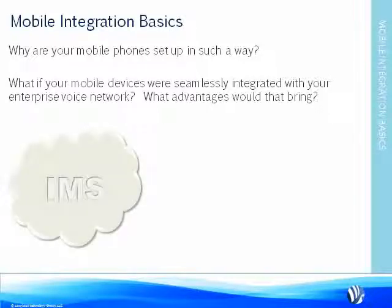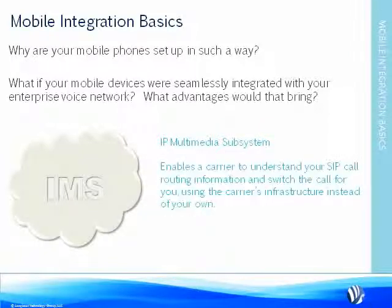The secret to effectively integrating mobile phones into your enterprise voice architecture is IMS, or IP Multimedia Subsystem. IMS enables a carrier to understand your SIP call routing information and switch the call for you, using the carrier's infrastructure instead of your own. It also enables the carrier to relay important information about your call, such as displaying your corporate DID or phone number instead of your cell phone number when making mobile calls, without impacting your PBX or network resources.